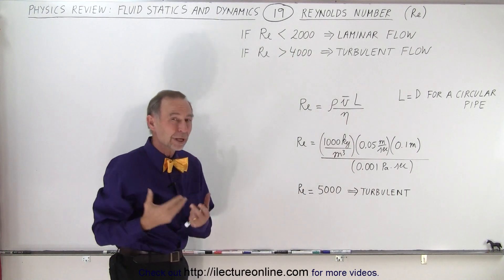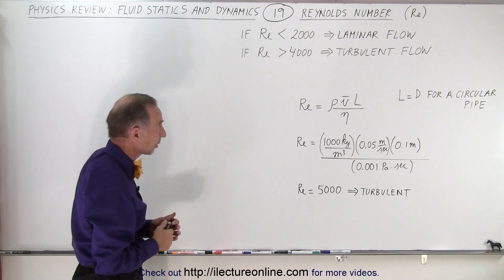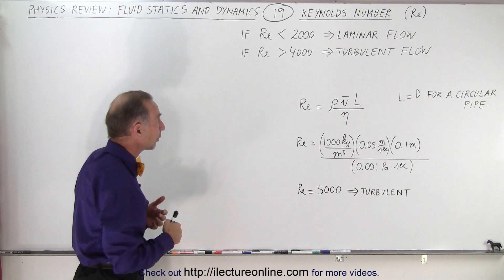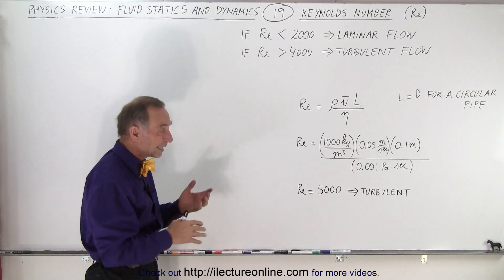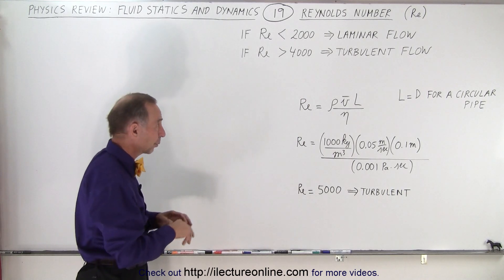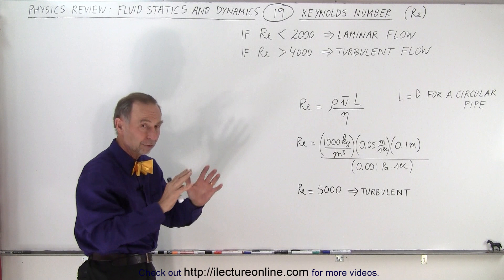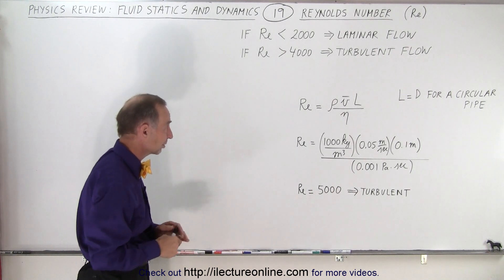Typically, when the Reynolds number is 2,000 or less, we can think of the fluid flow as being laminar, and when it's greater than 4,000, it tends to be turbulent. In between, it depends on a bunch of conditions: what type of material the fluid flows through, viscosity, friction, things like that.